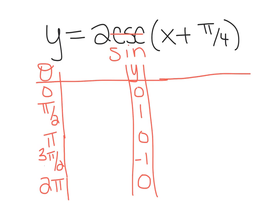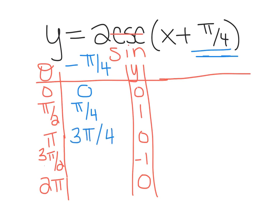Now we look at the equation: is there any transformation affecting the angles? Yes, there's a π/4, and since it says plus, we're going to subtract π/4 from each angle. So we get: negative π/4, π/4, 3π/4. Then 3π/2 minus π/4 — that's 1.5 minus 0.25, which equals 1.25, or 5π/4. And 2π minus π/4 is 1.75, which is 7π/4.